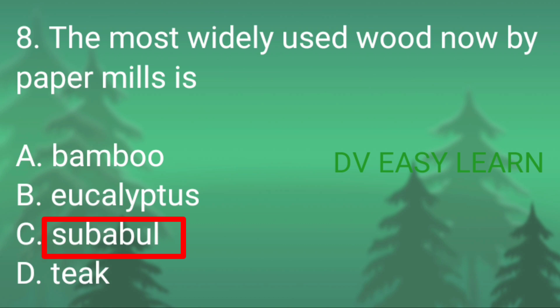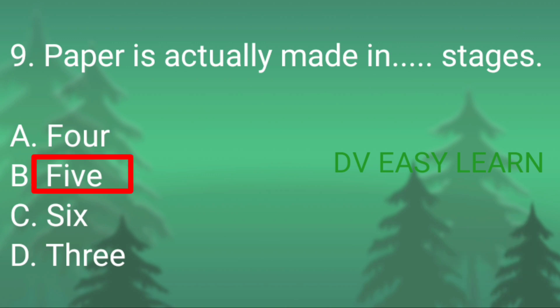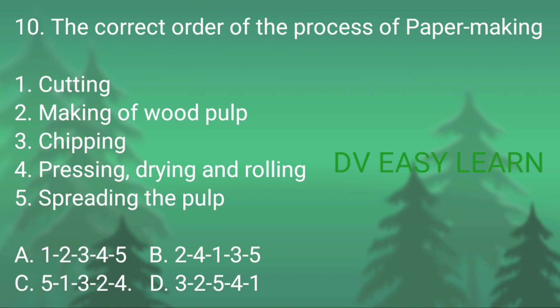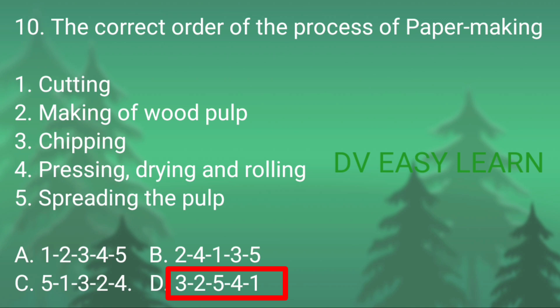Correct answer: subabul. Question number 9: paper is actually made in how many stages — correct answer: five. Question number 10: the correct order of process of paper making — correct answer: D — 3, 2, 5, 4, 1 — chipping, making of wood pulp, spreading the pulp, pressing, drying and rolling, and cutting.